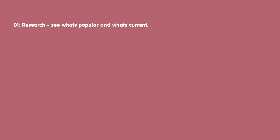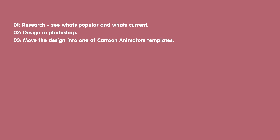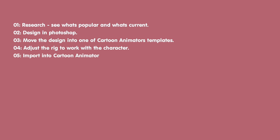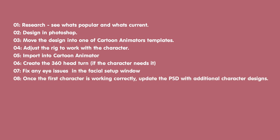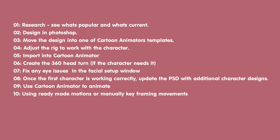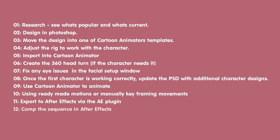Everyone will have their own workflows. However, mine is: do some research — see what's popular and what's current. Design in Photoshop. Move the design into one of Cartoon Animator's templates. Adjust the rig to work with my character, then import into Cartoon Animator and create the head 360 turn if the character needs it. Fix any eye issues in the facial setup window. Once I've got the main first character working, I update the PSD to make additional characters. I then use Cartoon Animator to animate — use ready-made motions or manually keyframe movements. Once the animation is done, I export to After Effects via the plugin, comp the sequence a little more, and then do the final render.